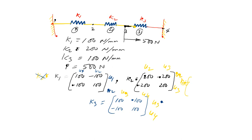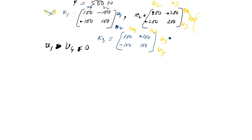The displacements u1 and u4 are 0 — that is the boundary condition. u1 = u4 = 0 because it is a fixed element. Now, the global stiffness matrix is nothing but the assembling of all the stiffness matrices.